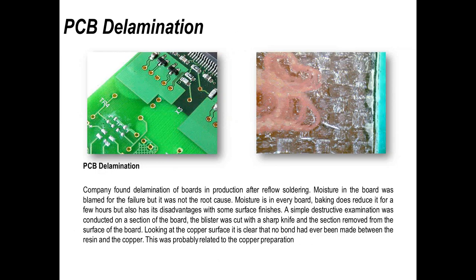The next common fault is delamination. Delamination of a printed circuit board, if you can see it, is quite gross and has possibly caused the board to fail. If it's minor you may not notice, but you certainly have to question it. The example on the left shows delamination on the surface with bubbles forming. On the right, I show an example of the Bob Willis quick test — I literally cut a sample of the board with a pen knife and separate those samples to see if we've got an adhesion problem.